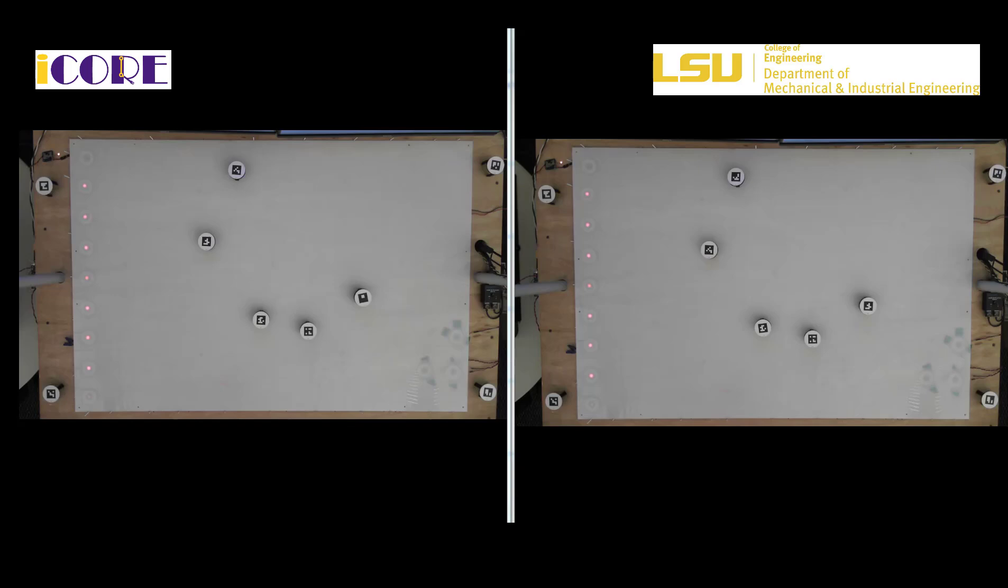The left side video is an undirected rigid graph and the right side is using the directed one. The theory and control design has been done in ME department of Louisiana State University. However, the experiment has been executed through Robotarium Web Interface, which is a remote access environment located in Georgia Tech.